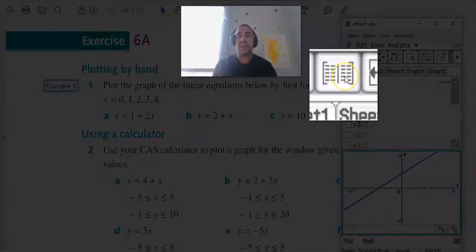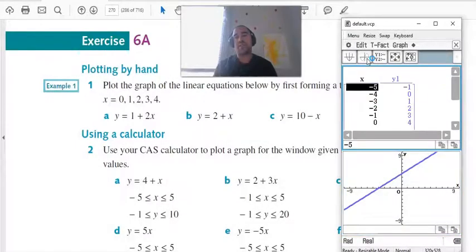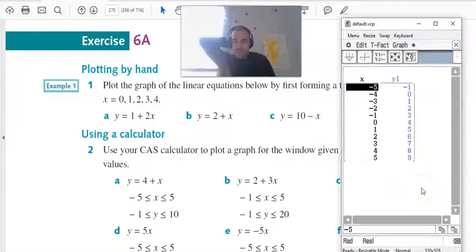We now want to display this through a table using this button here. When you click on this, this will show you the values from negative 5, and when you scroll down all the way to positive 5... I'm not going to scroll down. I'm going to press the resize button—your resize button will be in the middle of your calculator—and that way it will pop up all the values.